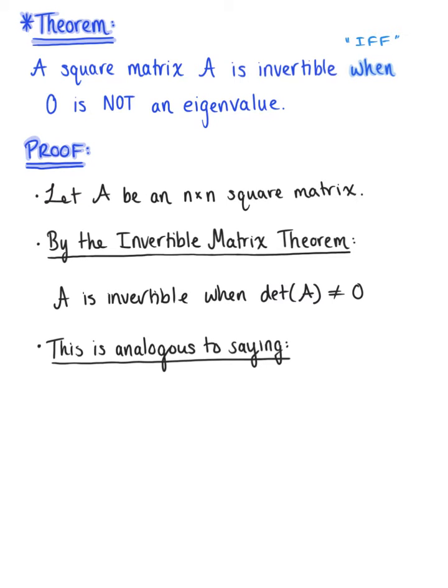Now this is analogous to saying that the determinant of A is equal to the determinant of matrix A minus 0 times the n-by-n identity matrix does not equal 0.